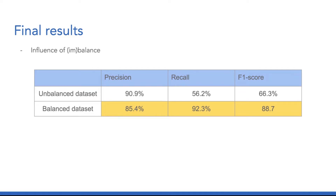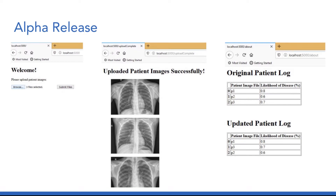Here are our final results. We can see that for the imbalanced dataset, we have a very low recall of 56%. However, using the balanced dataset, we managed to reach a recall of 92% and a precision of 85.4%. For our alpha release, we allowed users to upload patient files and displayed the patient images. We also provided a mock-up of the patient logs. The original patient log ordered patients chronologically based on the upload queue, whereas the updated patient log sorted by prioritizing patients with the higher likelihood of disease at the top.